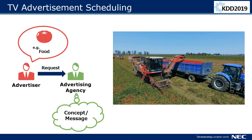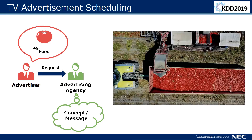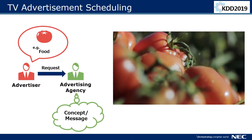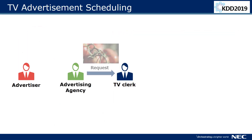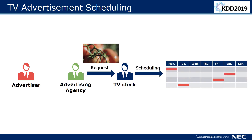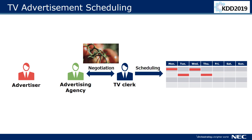Companies or advertisers wanting to promote their products first discuss with ad agencies to come up with an ad concept, from which a TV ad will be created. Once the ad is fixed, the agency will ask TV clerks to place it in desirable spots, which the clerks try to accommodate. As there is a very limited number of slots, the agency and clerks negotiate to arrive at a mutually acceptable schedule.